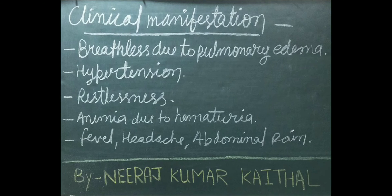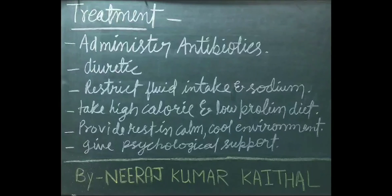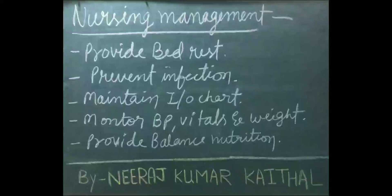Due to hematuria: fever, headache, and abdominal pain. Treatment of glomerulonephritis includes administration of antibiotic medicines, diuretic drugs, restrict fluid intake and sodium, take high calorie and low protein diet, provide rest in a calm cool environment, and give psychological support.